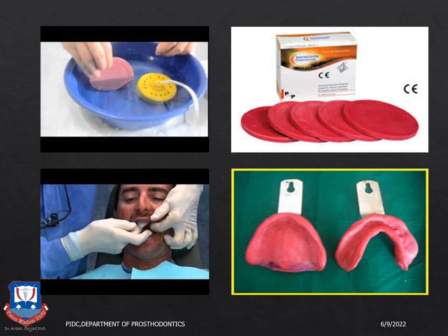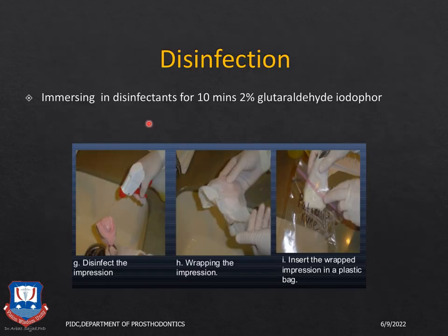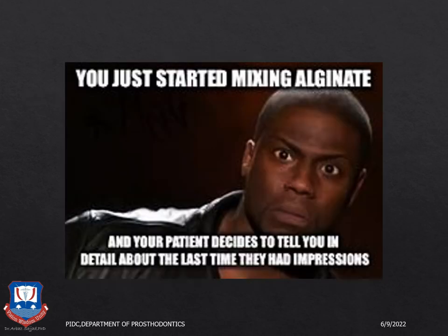After primary or secondary impressions are made, they need to be disinfected. The most commonly used disinfectant is 2% glutaraldehyde — spray the impression, place it in a plastic bag or humidor for 10 minutes, after which it can be rinsed and the models can be poured. This brings us to the end of today's lecture. Thank you.